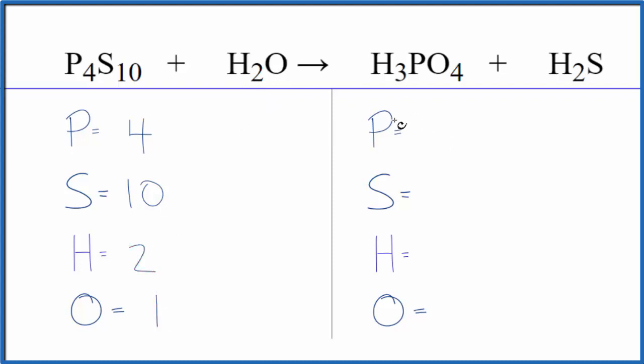On the product side, the phosphorus, we have one of those, sulfur just one, hydrogens we have three plus the two hydrogens here in the H2S. So we have five of those, four oxygen atoms. I like to leave the hydrogens and oxygens to last when I balance equations, so let's just start with the phosphorus.